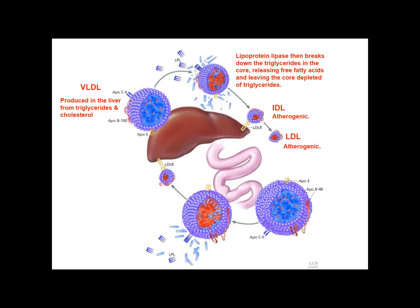IDL can be further broken down — if depletion of the triglycerides continues, it becomes smaller and forms low density lipoprotein, LDL, which is also atherogenic. Notably, the intermediate density lipoprotein is shown with its little protein about to dock onto a receptor in the liver. This tells us that IDL can actually be taken up into the liver and removed from circulation, or it can be further acted on by lipoprotein lipase until it ends up as LDL.